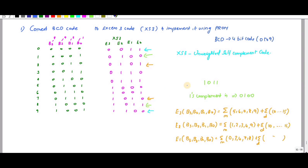If I take the 1's complement of this number — 1's complement means the inverse — so 1011 becomes 0100. And if we see the brown arrow, 1010's 1's complement is 0101. This is why it is called a self-complement code.